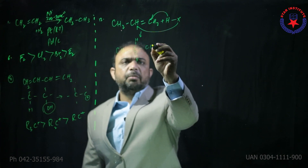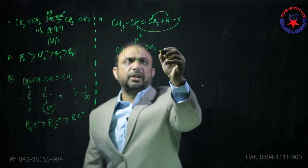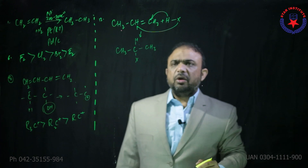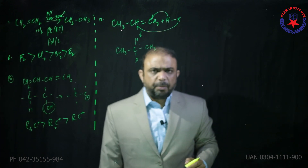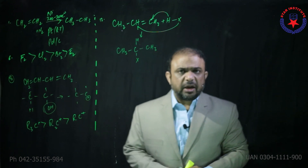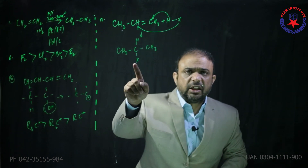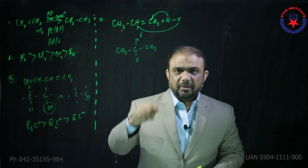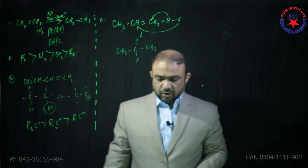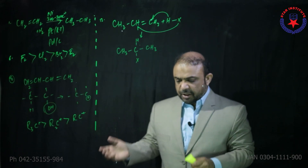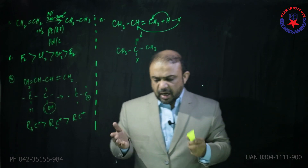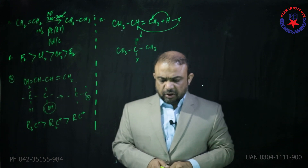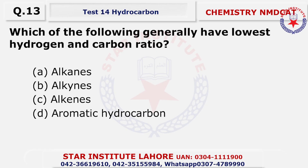To identify Markovnikov's addition: normally the product of Markovnikov's addition is a secondary alkyl halide. The choice is: unsymmetrical reagent + unsymmetrical alkene. Question 13: which of the following generally has the lowest hydrogen-to-carbon ratio?